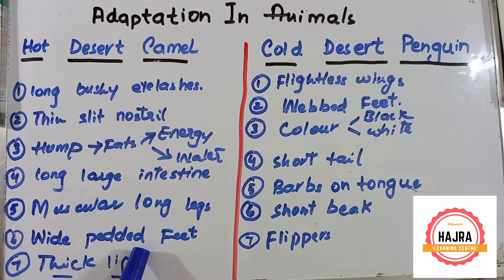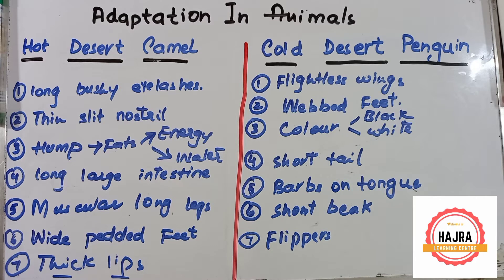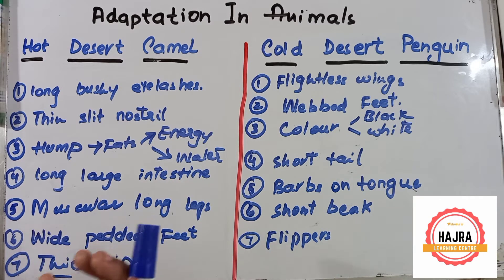Number seven, the last point for camel: they have thick lips so they can eat prickly desert plants.